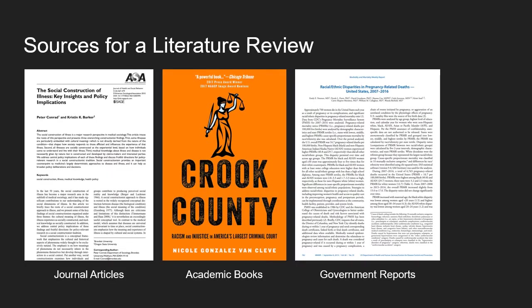The types of sources that are relevant to include in a literature review include peer-reviewed academic journal articles, academic books, and government reports. Government reports might come from sources like the Bureau of Justice Statistics or the Centers for Disease Control and Prevention.